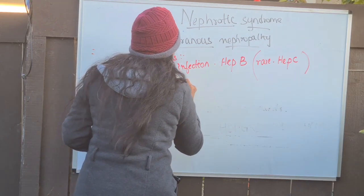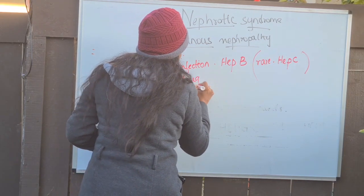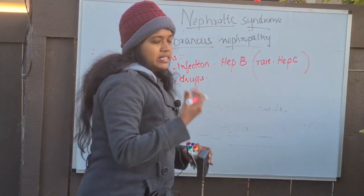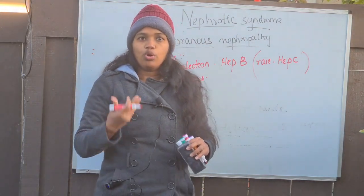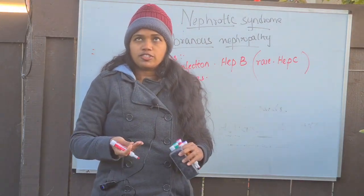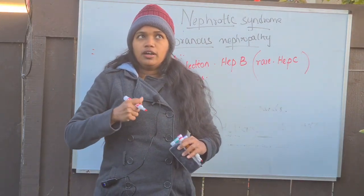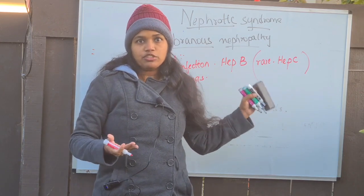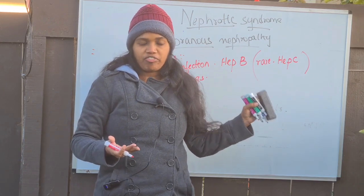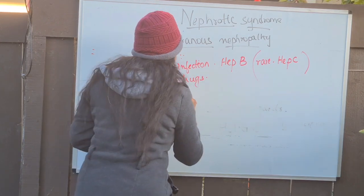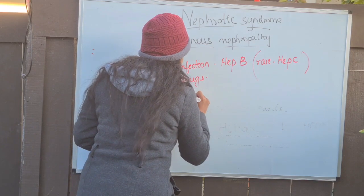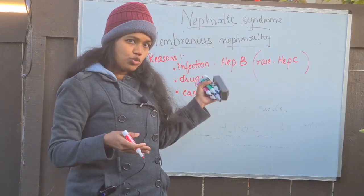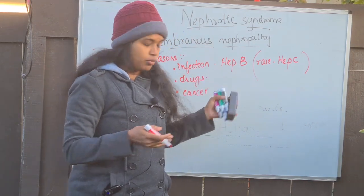The other cause is drugs — drugs like penicillamine, dapsone, gold salts, and sulfonamides can result in membranous nephropathy. And the third one is cancer. Cancers like breast cancer and pancreatic cancer can also result in membranous nephropathy.